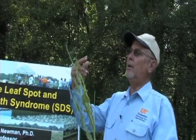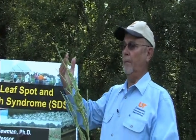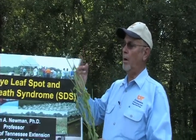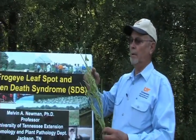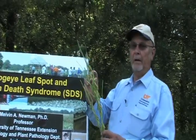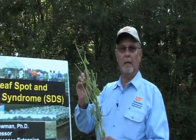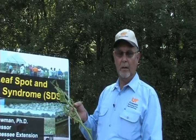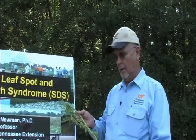How do you know when it's R3? When it has 10, 11, or 12 nodes, count down 4 nodes from the top. If there's a very small pod about 3 sixteenths of an inch long, then that's the R3 stage — the ideal time to put the fungicide on. We'll look at some data in just a minute.